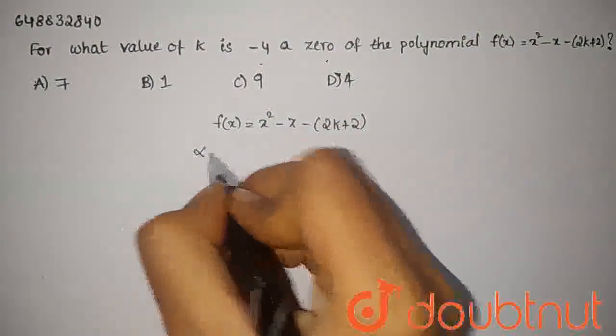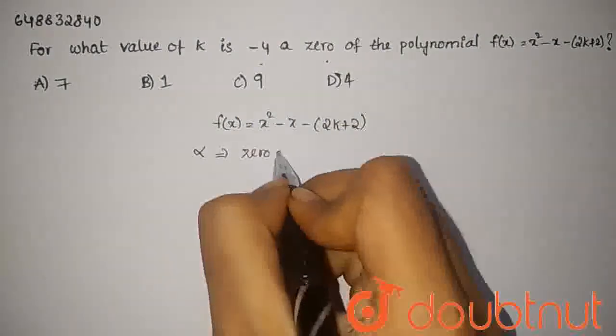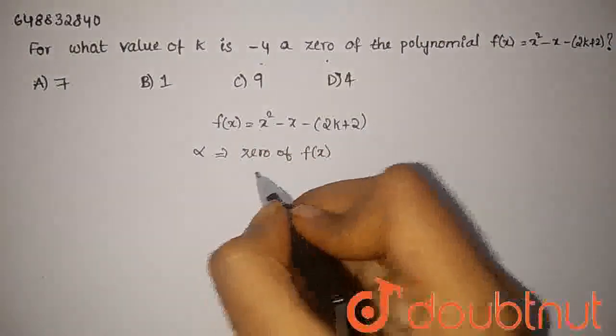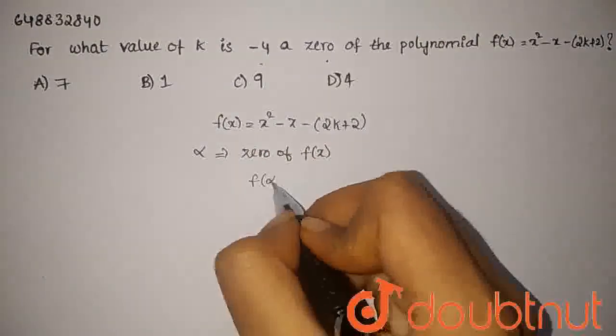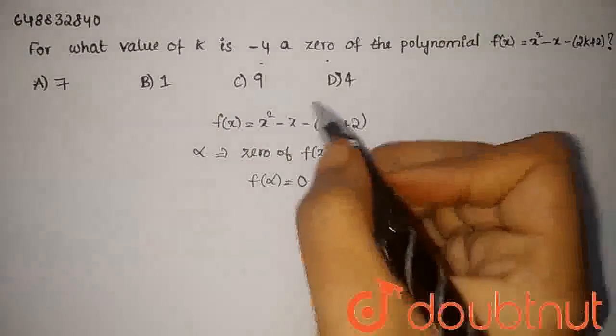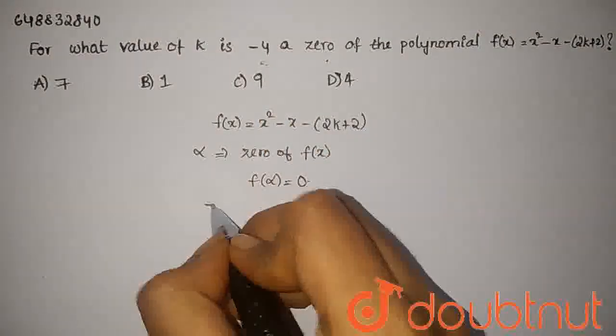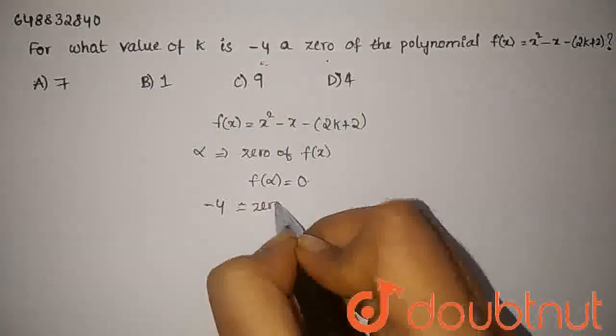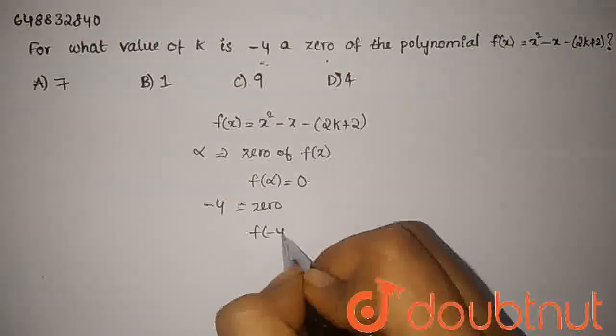If alpha is a zero of f(x), then f of alpha will be zero. We're given here minus 4 is a zero of the polynomial. This is why f of minus 4 equals zero.